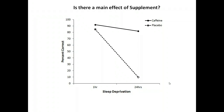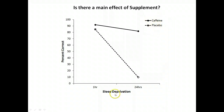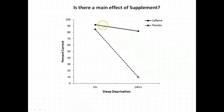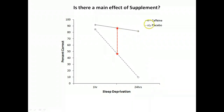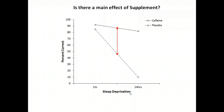The second question is whether there's a main effect of supplement. In a similar fashion, we want to examine the average performance for the caffeine group and for the placebo group whilst ignoring the levels of the sleep deprivation factor. For the caffeine group, the average performance falls roughly in the center, and the average for the placebo group falls roughly here. The analysis is simply asking whether these two averages are different — examining the effect of caffeine versus placebo whilst ignoring sleep deprivation. The mathematics are more complex, but that's what the analysis is doing.